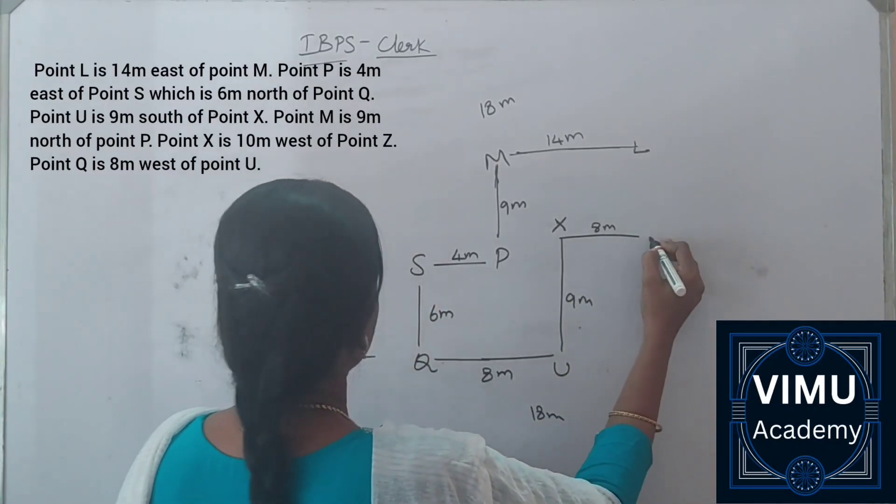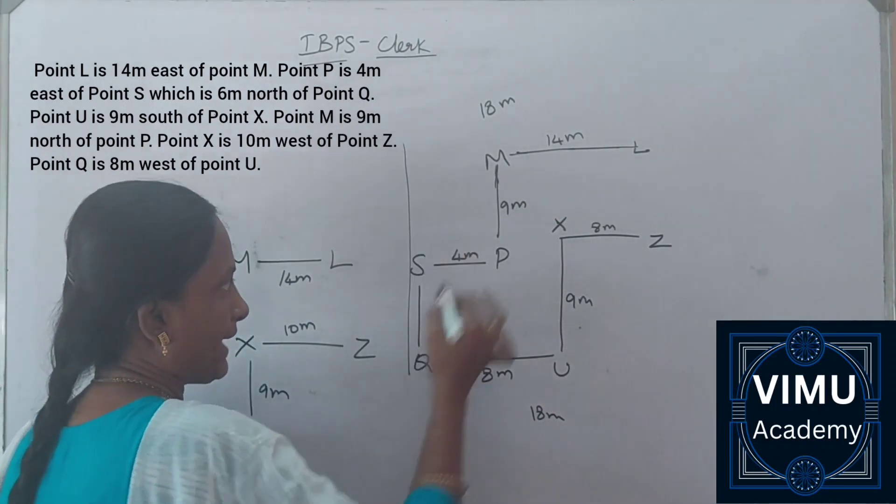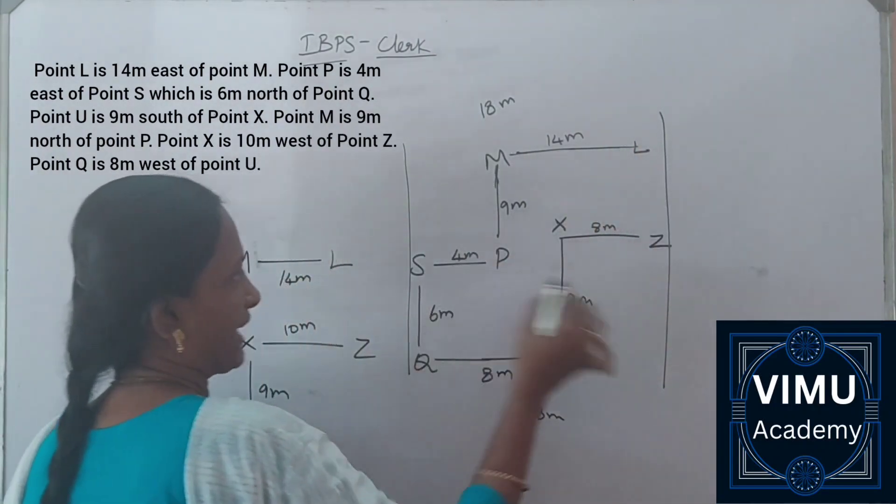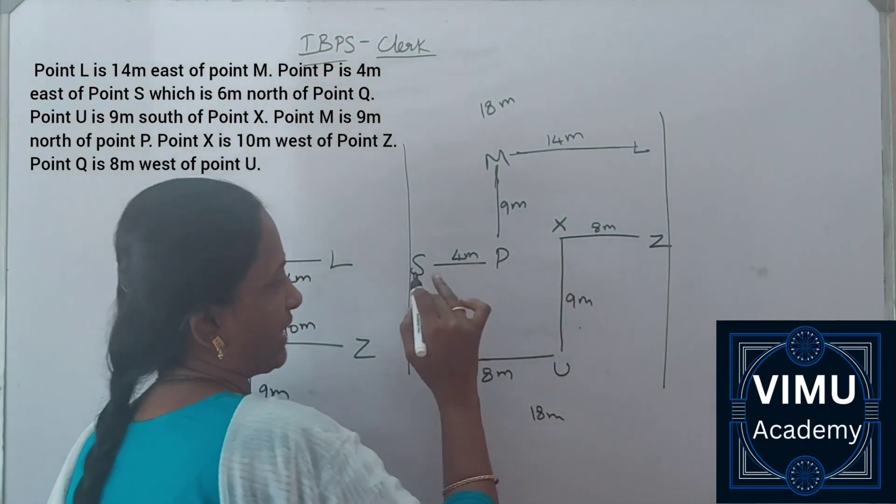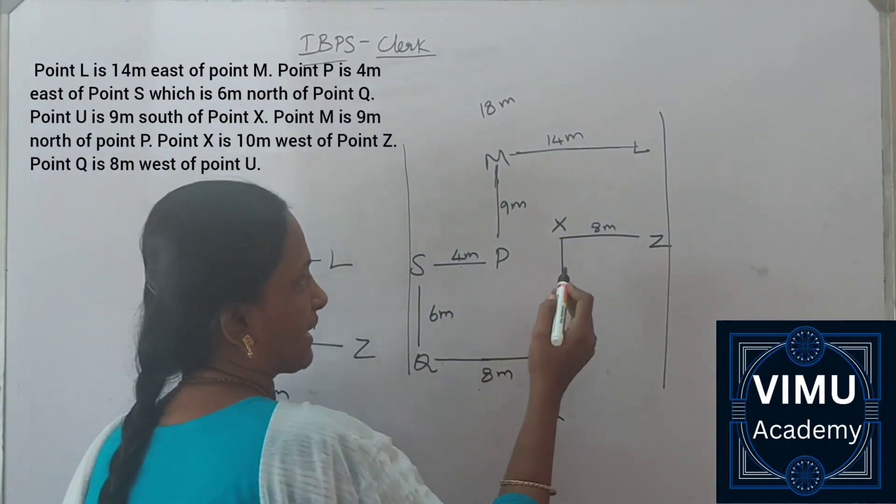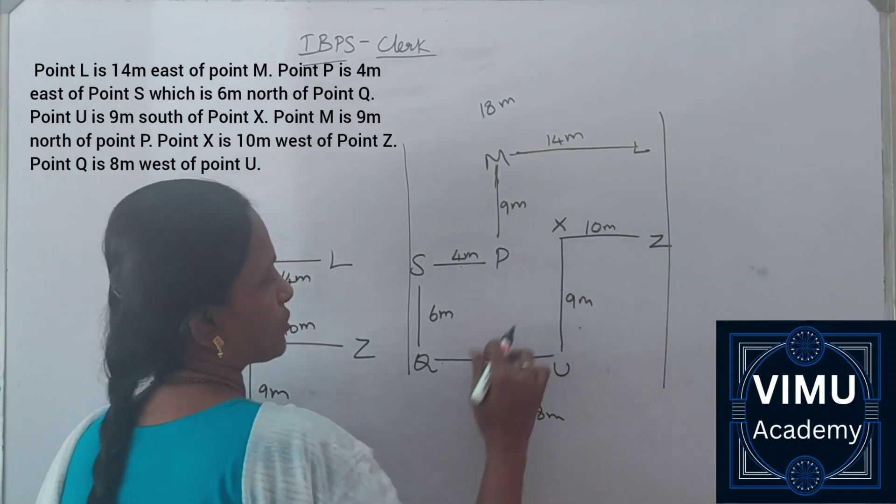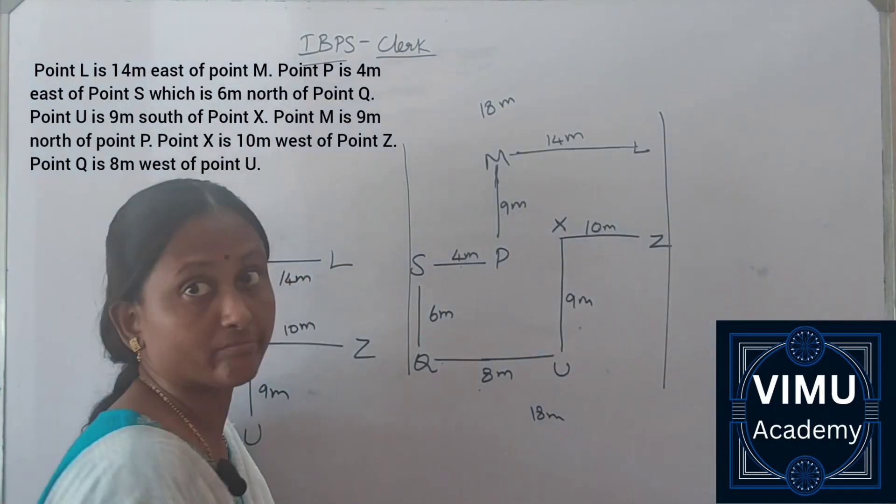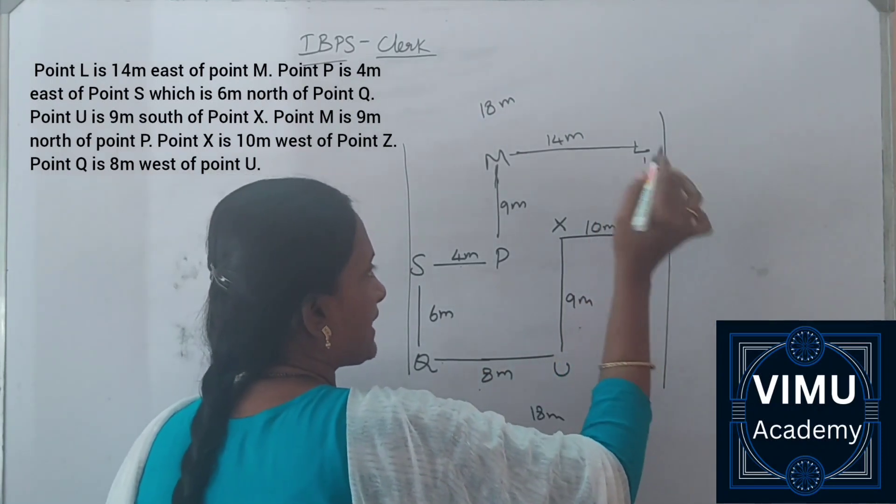Actually, this is Z. The distance between X and Z - this is 14 plus 4 which is 18 meters, and this is 8 meters. X and Z have 10 meters, so 8 plus 10 equals 18 meters. The distances match at 18 meters.